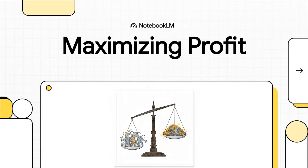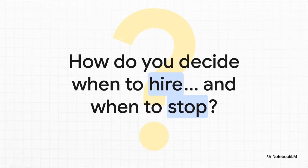Welcome. Today we are going to break down how pretty much any producer, whether it's a tiny startup or a giant factory, makes two of the most critical decisions they face: how many people they should hire, and just how much stuff they should actually create. Let's start with a classic dilemma. Imagine you've started a business. Things are going great. But how do you decide when to hire more people and, just as importantly, when to stop? Because hiring just one person too many can be the thing that turns your profits into losses. So where is that sweet spot?